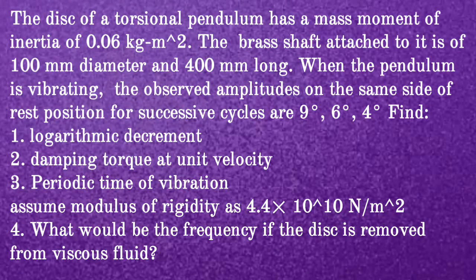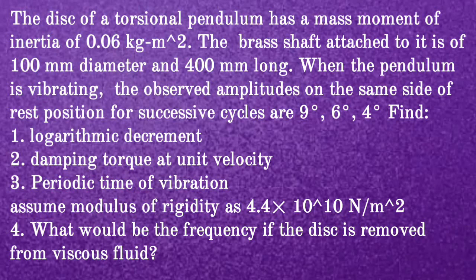Given question: The disc of a torsional pendulum has a mass moment of inertia of 0.06 kgm². The brass shaft attached to it is 100 mm diameter and 400 mm long. When the pendulum is vibrating, the observed amplitudes on the same side of rest position for successive cycles are 9°, 6°, and 4°. Find: first, logarithmic decrement; second, damping torque at unit velocity; third, periodic time of vibration. Assume the modulus of rigidity as 4.4 × 10¹⁰ N/m². Fourth, what would be the frequency if the disc is removed from viscous fluid?